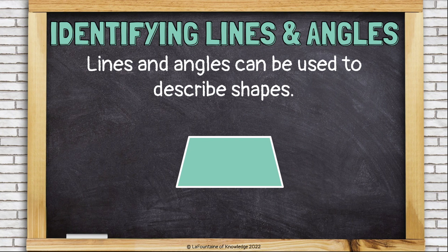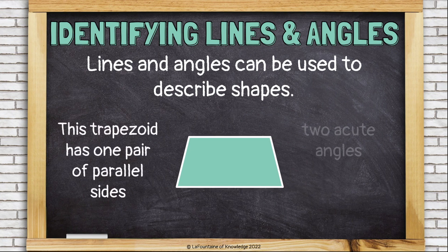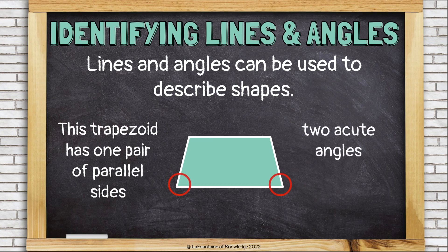Let's look at this trapezoid next. It has one pair of parallel sides, the top and bottom, two acute angles, and two obtuse angles.